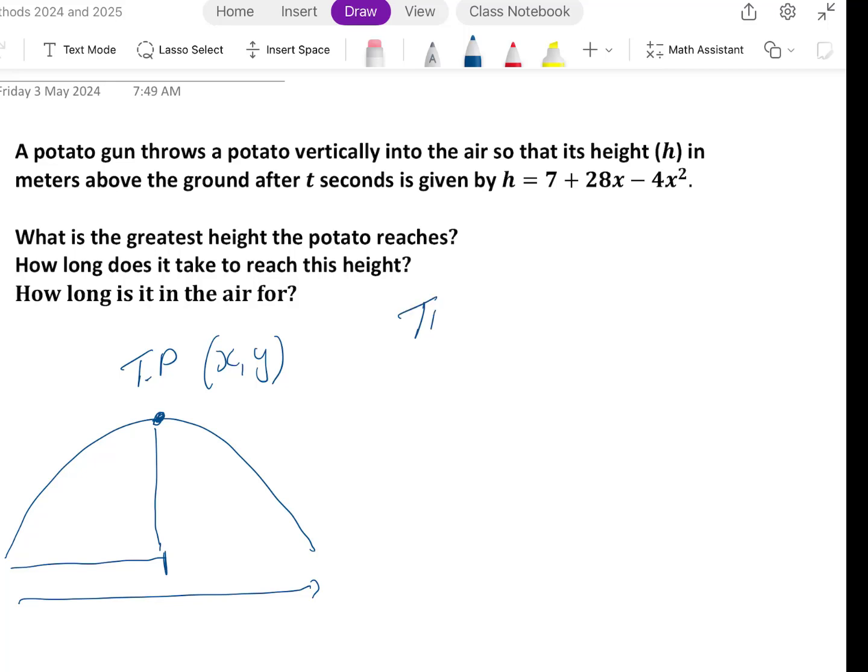The turning point of a quadratic formula can be found by doing negative b on 2a. Looking at the formula up here, 28 is b, so negative 28 on 2 times negative 4, which is negative 28 on 8, which is 3.5. So using our x-axis as t, this then is 3.5 seconds to reach the greatest height.